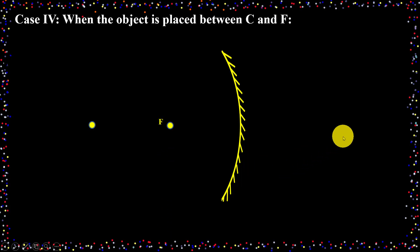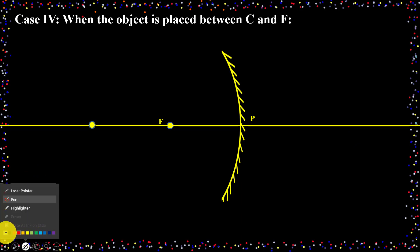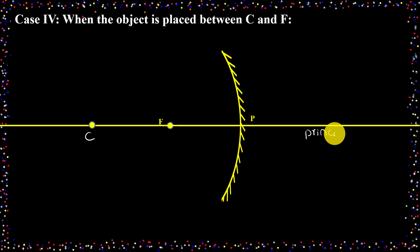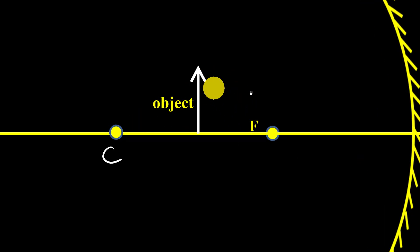So here is our concave mirror with the center of curvature and pole. The line joining the center of curvature and pole is called the principal axis. As per this case, I should place the object between C and F — that is, the object is between the center of curvature and the focus of the mirror.